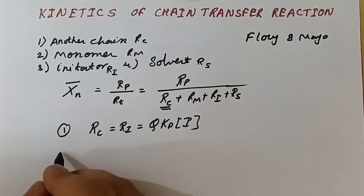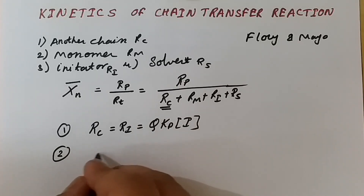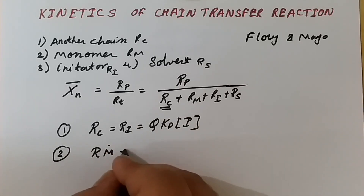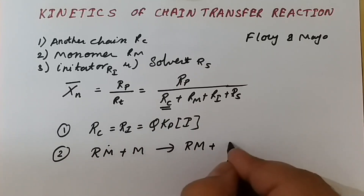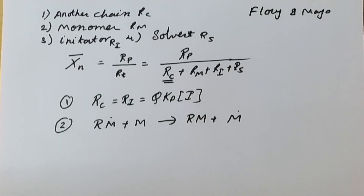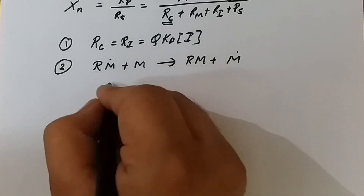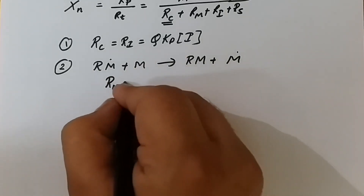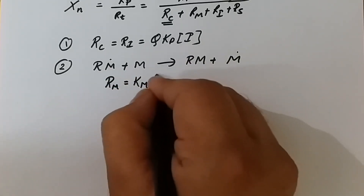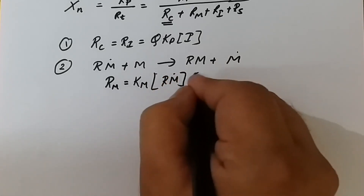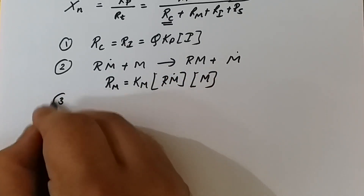The second mechanism is chain transfer to monomer. Suppose we have a propagating chain and a monomer — it will become Rm• plus the monomer, which will get the active center. This is how chain transfer to monomer takes place. Hence the rate of chain transfer to monomer equals km·[Rm•]·[M].